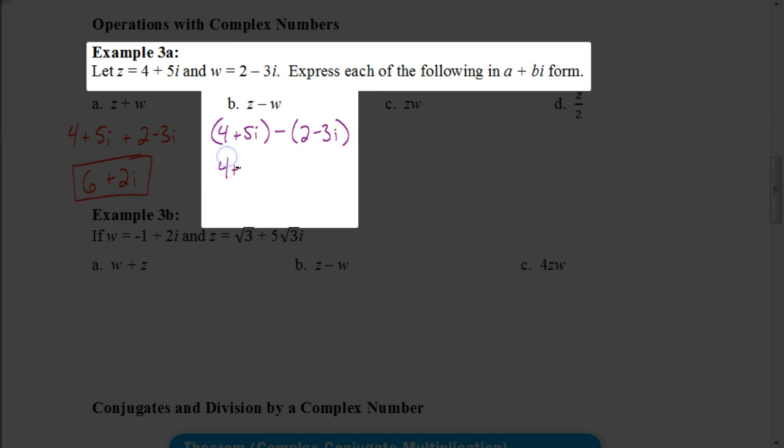So the way that I would do this is distribute the negative through. So again, the 4 plus 5i, it's not necessary to have that in parentheses. But I'm going to distribute the negative through. So this would be negative 2, and a negative times a negative 3i becomes plus 3i. And now we can simplify this. Combine like terms like we did in the previous one. 4 plus negative 2, or 4 minus 2, would be 2. And 5i plus 3i would be 8i. So our answer here would just be 2 plus 8i.